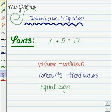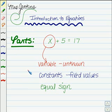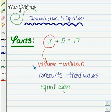Every equation that you work with is going to have several things in common. One thing that most equations will have is what's called a variable. It's an unknown value — it is a number, it's just a number that you don't know the value of at the current time. Later on, you may look at solving these equations and you'll solve for that variable. But that's the unknown and it's represented by letters like X or Y or A or B.